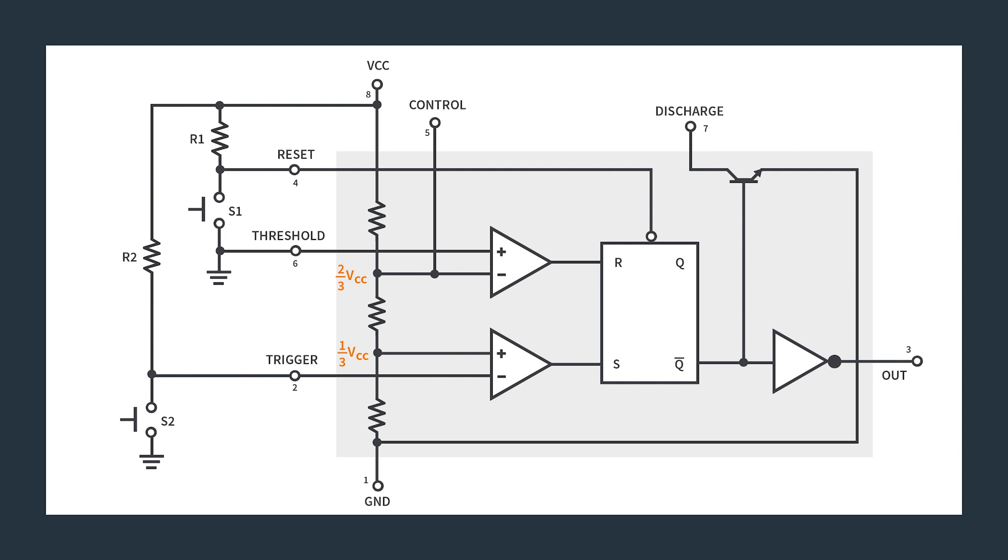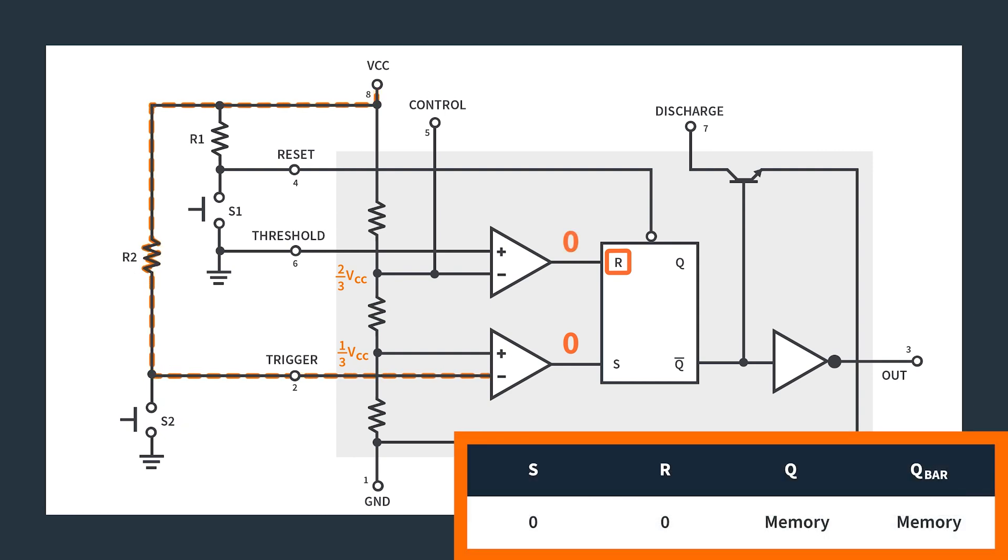In the normal state where you don't have any of the buttons being pushed, you basically have your inverting input to your lower comparator tied to VCC, which makes that higher than your non-inverting input, which makes your output zero. On your upper comparator, your non-inverting input is tied to ground, which is obviously lower than two-thirds VCC. So your output of the upper comparator to your R is also going to be low. From the truth table of the SR flip-flop, if your inputs to R and S are both zero, it is a memory state—it just outputs whatever its last state was.